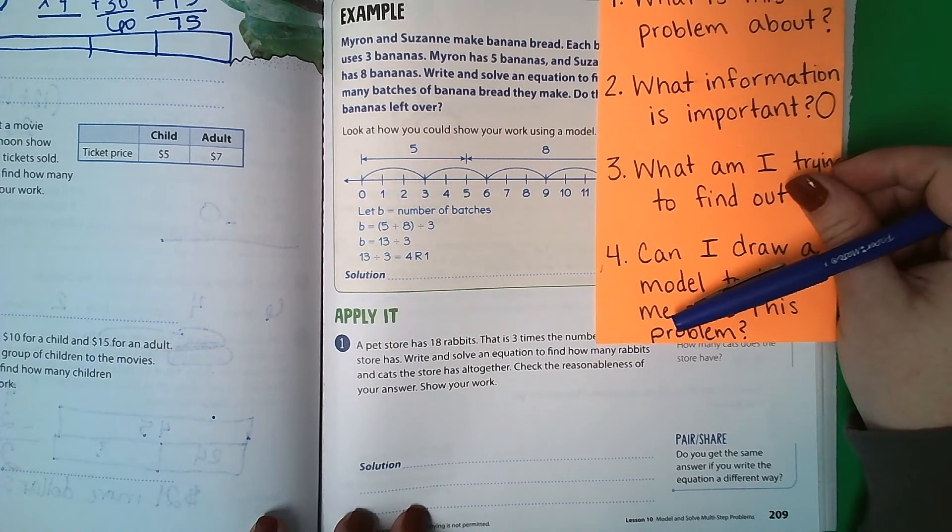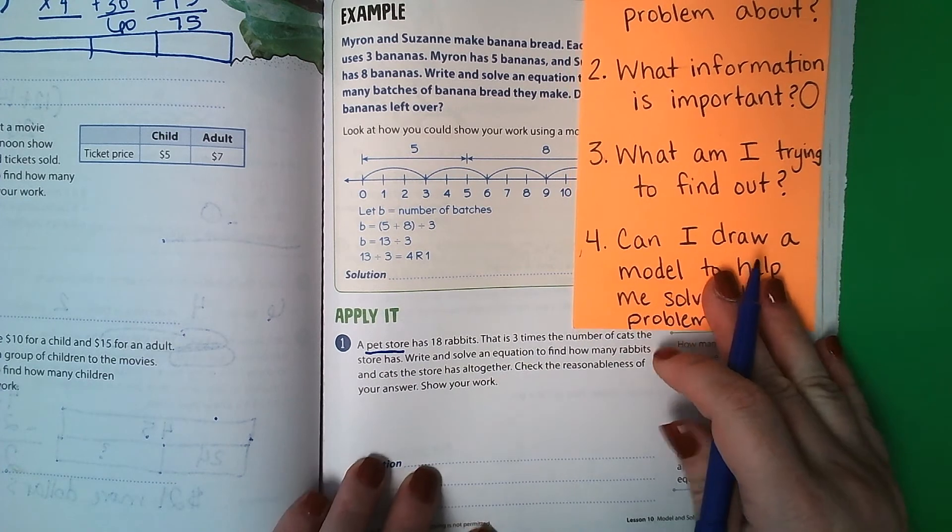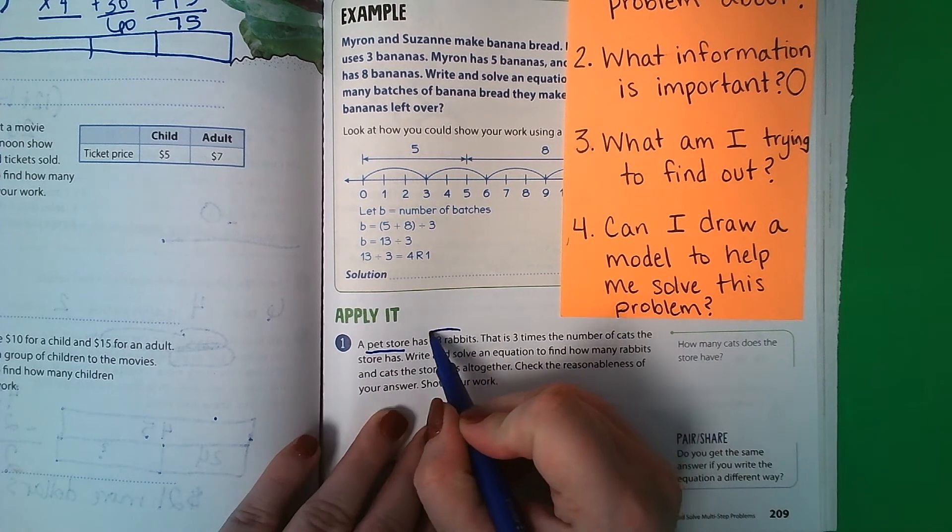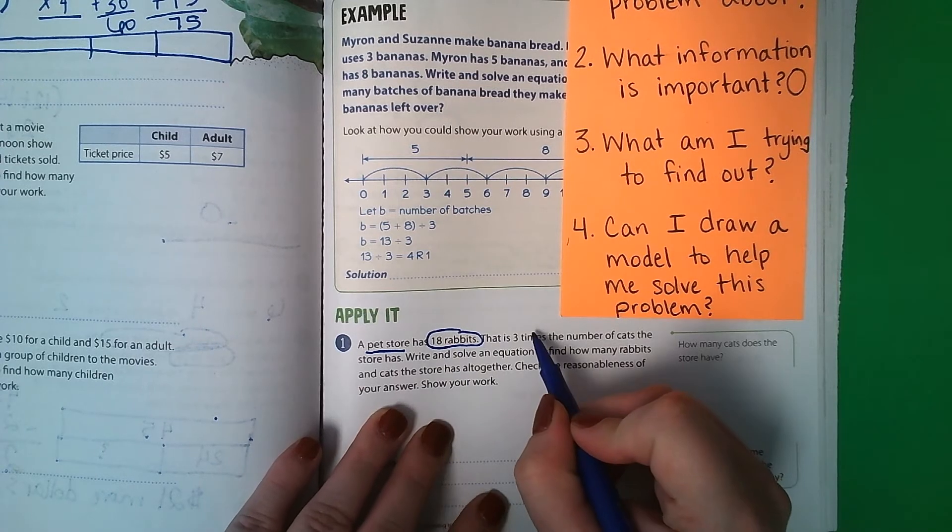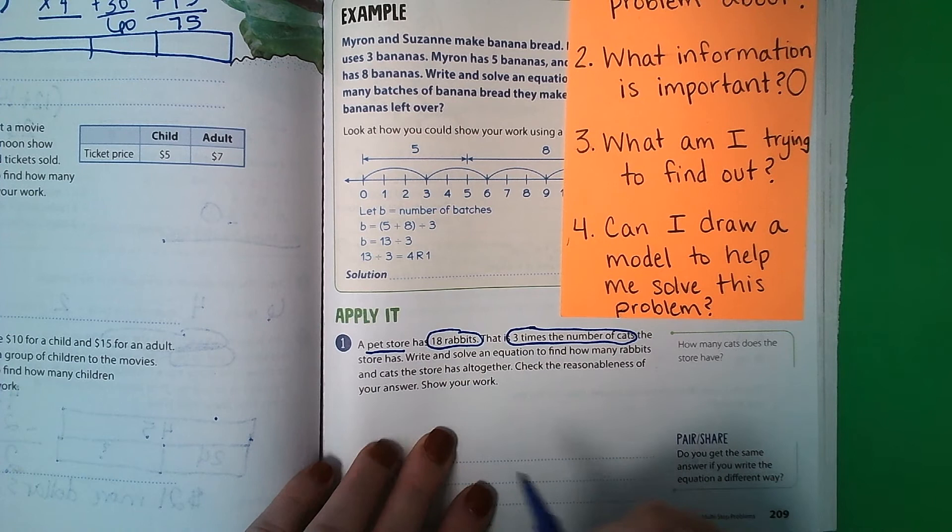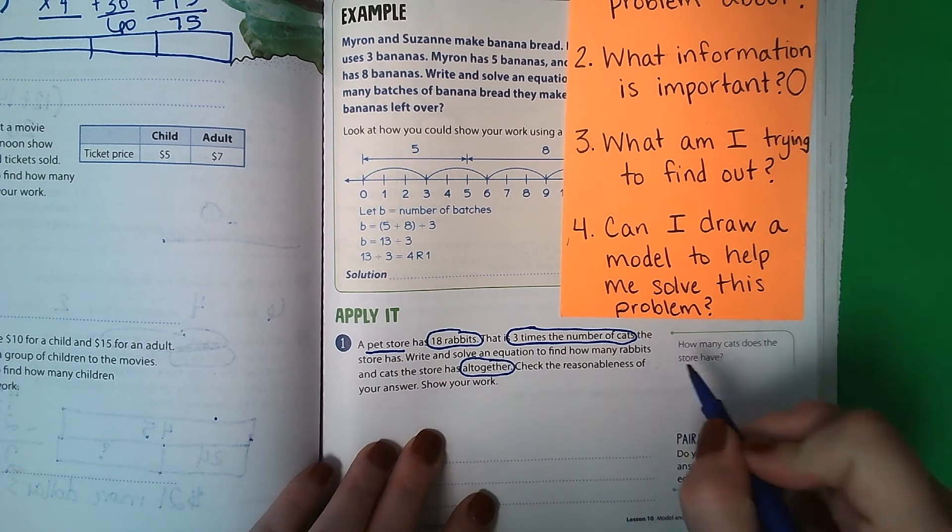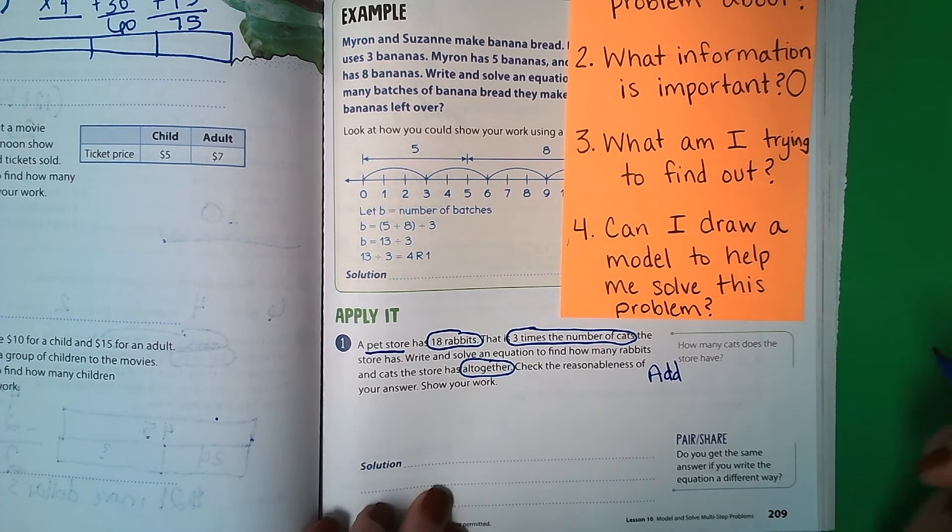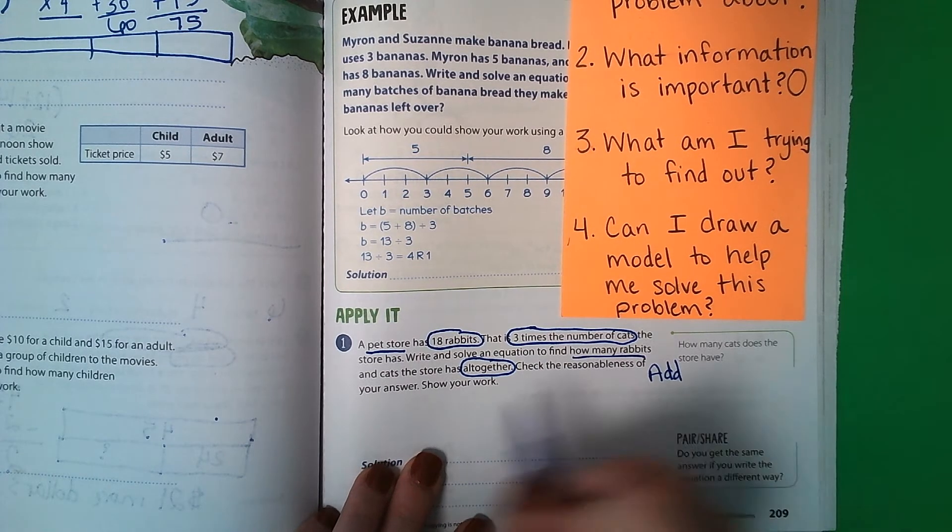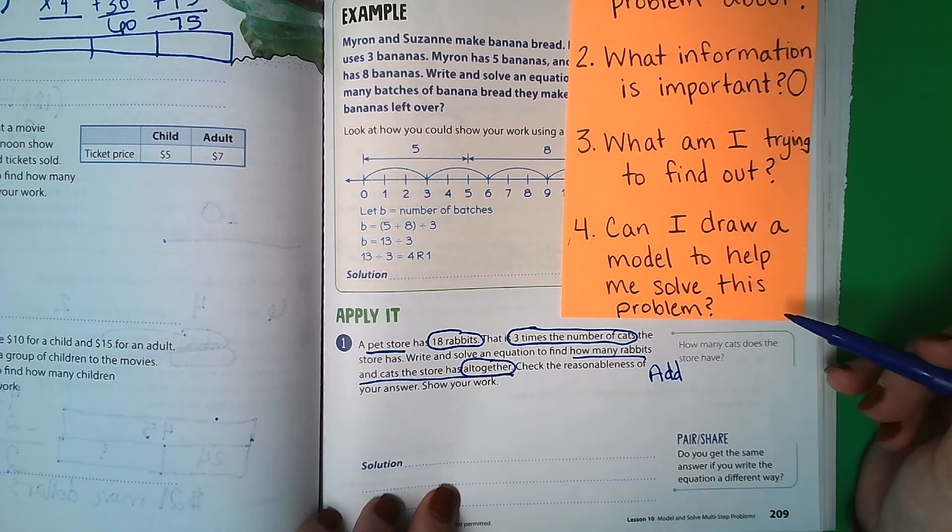What is this problem about? Well, it's about a pet store and they have cats and rabbits and they want to know how many they have altogether. What information is important? It's important to know that they have 18 rabbits and it's important to know they have three times that number of cats. And then also, the word altogether is important because altogether tells me that I'm going to add. What am I trying to find out? I'm trying to find out how many rabbits and cats the store has altogether. Can I draw a model to solve this problem? Yes, I can.